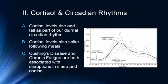Cushing's disease and chronic fatigue are both associated with disruptions in both sleep and cortisol. In Cushing's disease, caused by a tumor usually in the hypothalamus area, there are massive releases of cortisol — cortisol levels are way above where they would normally be during waking time. As a result, the person's 24-hour sleep cycle is quite disrupted.